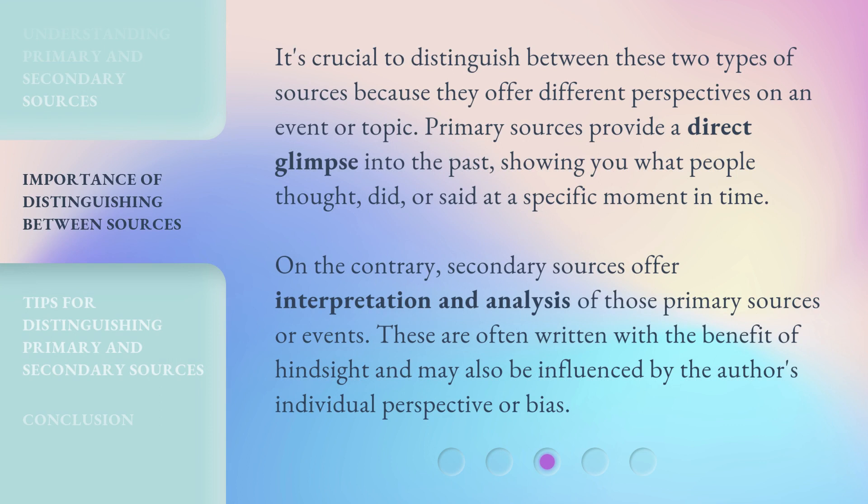It's crucial to distinguish between these two types of sources because they offer different perspectives on an event or topic. Primary sources provide a direct glimpse into the past, showing you what people thought, did, or said at a specific moment in time. On the contrary, secondary sources offer interpretation and analysis of those primary sources or events. These are often written with the benefit of hindsight and may also be influenced by the author's individual perspective or bias.